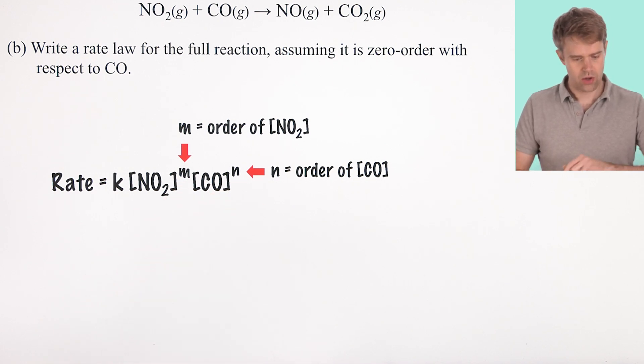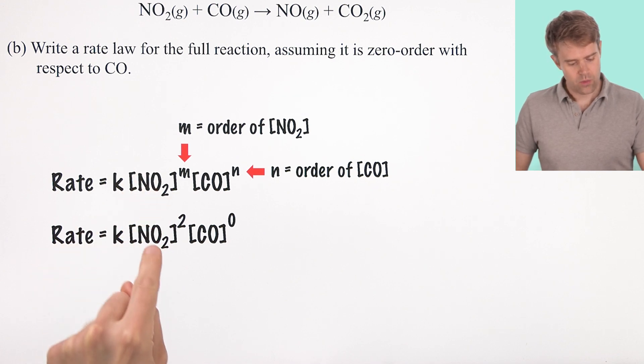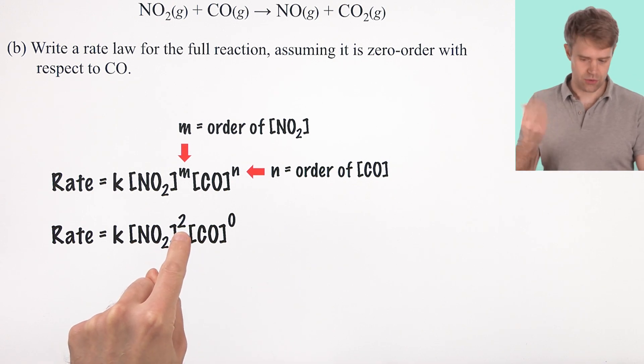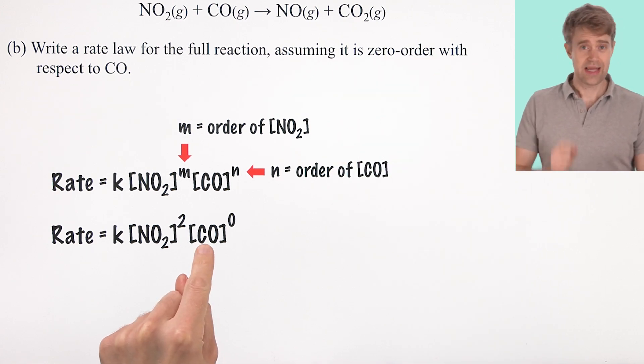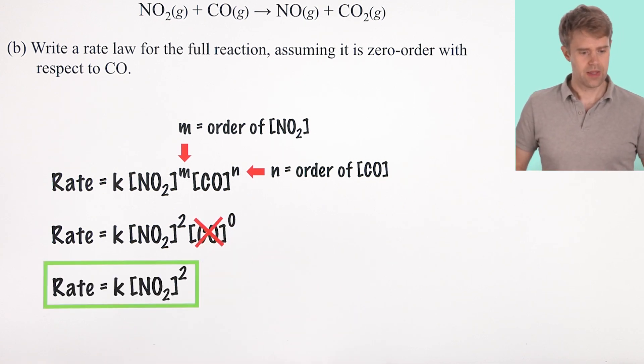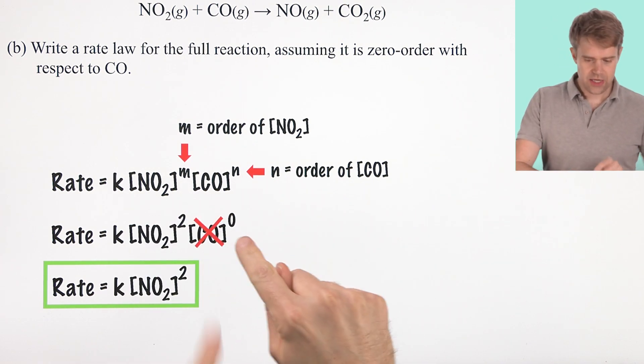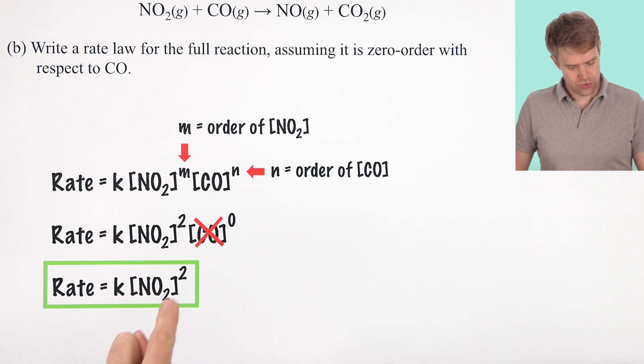For this reaction, we can write the rate law like this, where M and N are the order of NO2 and CO respectively. From part A, we know that the reaction is second order with respect to NO2. So the exponent on NO2 is 2. And part B tells us that carbon monoxide is zero order. So its exponent is going to be zero. Since anything raised to the zero power is 1, that means that the CO drops out. And our rate law is going to be rate equals K [NO2] raised to the second power.